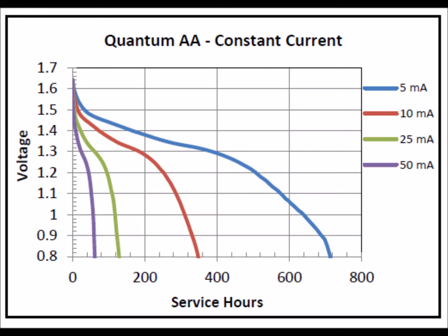When you get to the constant current curve for the battery, you can see that the current level affects the number of hours that the battery will run. Obviously, if you run a battery at less current it's going to run for more hours, and if you run it at heavy current it will run for less time.